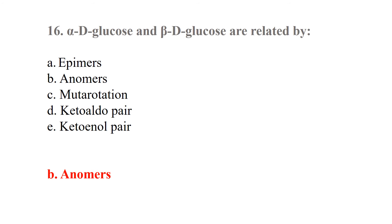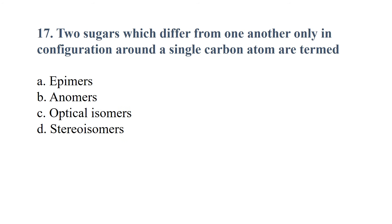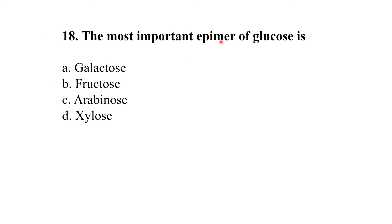Alpha-D-glucose and beta-D-glucose are anomers of each other. The next MCQ: two sugars which differ from one another only in configuration around a single carbon atom are termed epimers of each other.